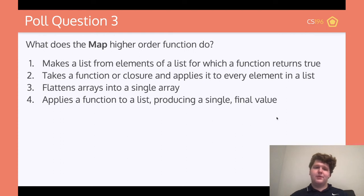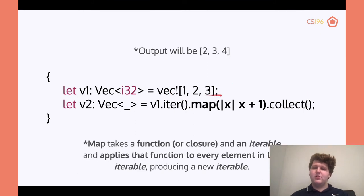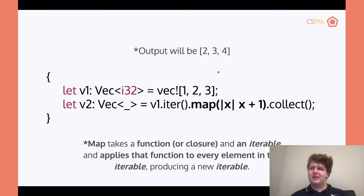It looks like everyone put 3, which is incorrect. 3 is actually doing something else. What we're doing is we're taking a function or a closure and applying it to every single element in the list. If we have 1, 2, and 3, we're going to return 2, 3, and 4. We're giving it some sort of function that can be defined in any way we want, and then putting all those elements through that function — that's what the map function does. All it does is apply some sort of anonymous function to every single element in an array or a list.